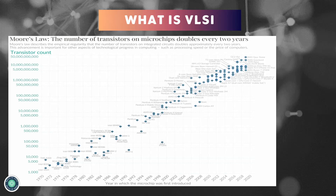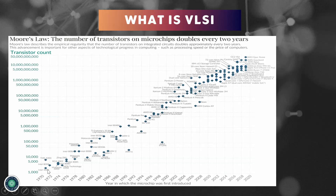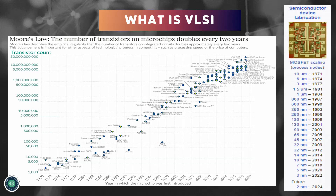Now let's look at the trends in VLSI. This figure shows how significantly this sector has grown. It started in 1971 with the Intel 4004 microprocessor — the first commercially produced microprocessor — which had around 2300 transistors and was built on 10 micrometer technology. With rapid development in the VLSI industry, today chips have more than 50 billion transistors and we are working with around 3 nanometer process technology nodes.